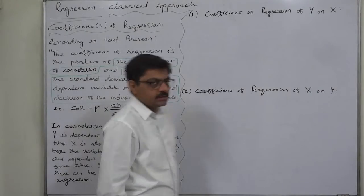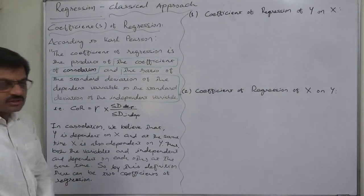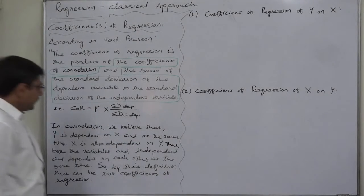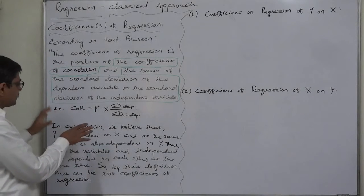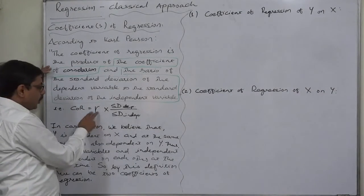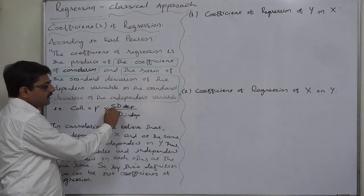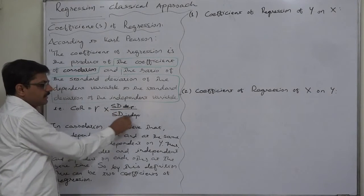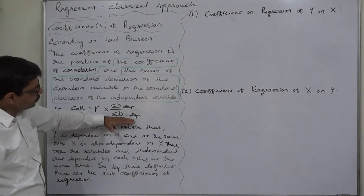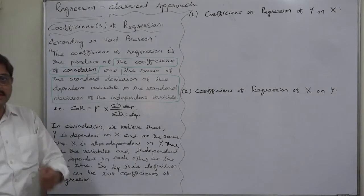That is the definition of coefficient of regression. Words may be somewhat different, but the concept is given by Carl Pearson. We can sum up the entire definition into a formula: the coefficient of regression is the product of the coefficient of correlation and the ratio of the standard deviation of the dependent variable to the standard deviation of the independent variable.